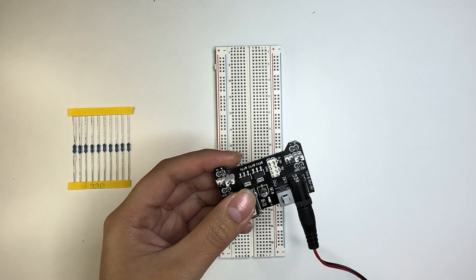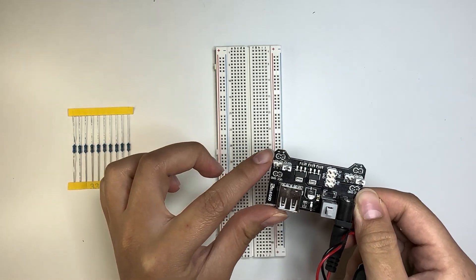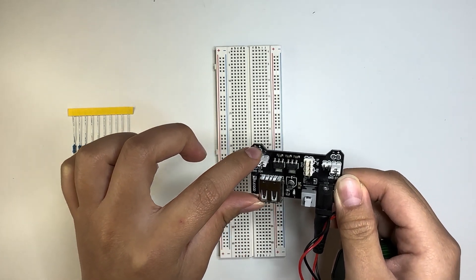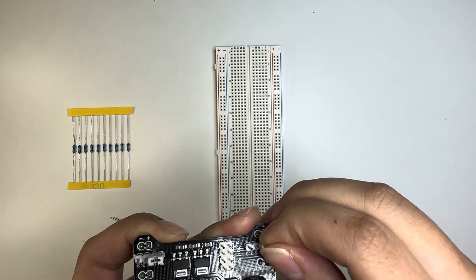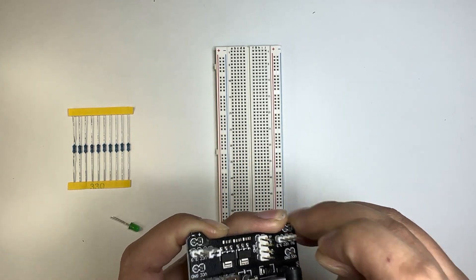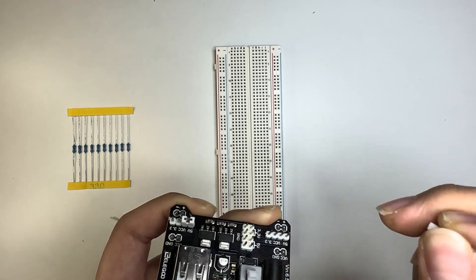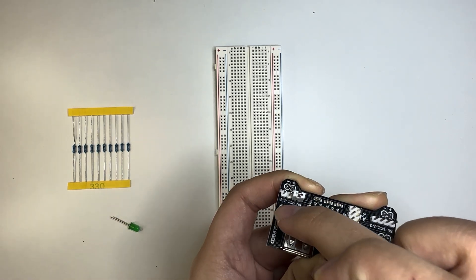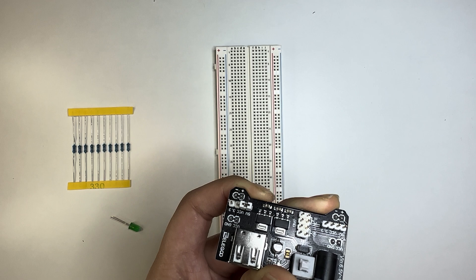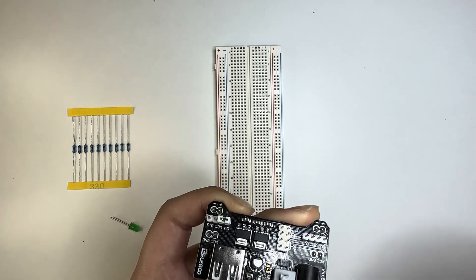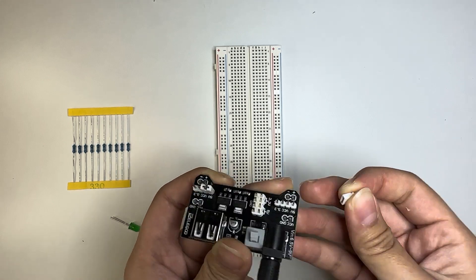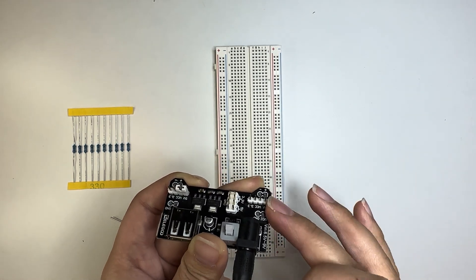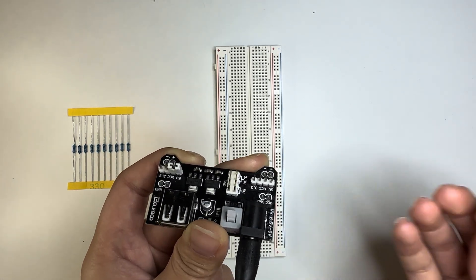And what you want to know about the power supply is you will see how there's negative and positive, negative and positive. And you will also see that here we have 5 volts and 3.3 volts, 5 volts and 3.3 volts. 3.3 volts will work for most applications, but 5 volt is just a safe option. So whenever you work with electronics, always just stick to 5 volts if you can.